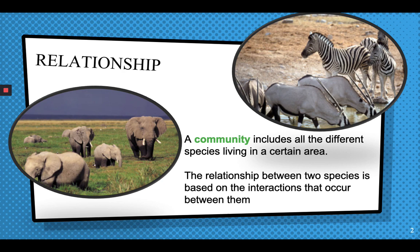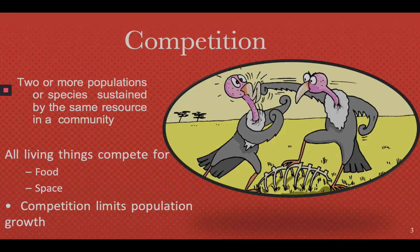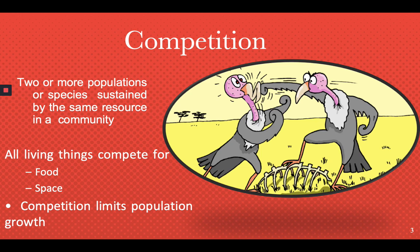The first relationship is competition — two or more populations or species compete for the same resource in a community, such as food or space. Competition actually helps limit population growth.